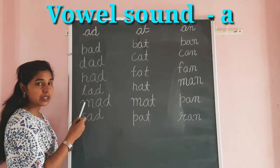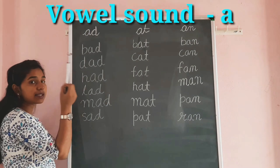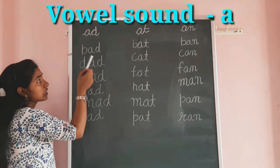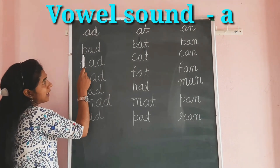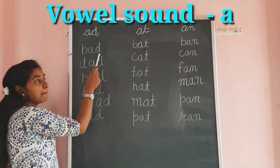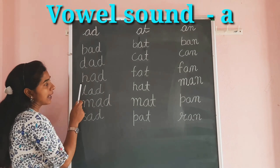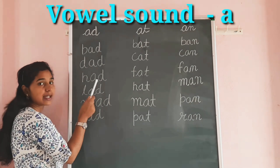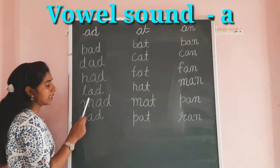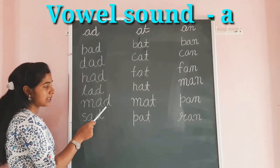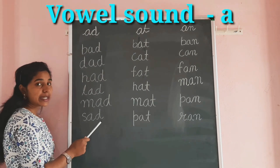These words all mainly have the sound A. There is a letter A which we have to focus on. So we will start to read them: B-A-D, Bad. D-A-D, Dad. H-A-D, Had. L-A-D, Lad. M-A-D, Mad. S-A-D, Sad.